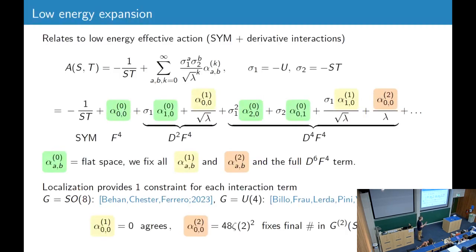First of all, we can consider the low-energy expansion. So this is the small, the expansion of small Mandelstam, or small alpha prime, makes contact with the low-energy effective action, which is super Yang-Mills plus derivative interactions. And if you write it out, you get the super Yang-Mills amplitude, and then you get these derivative contact terms.